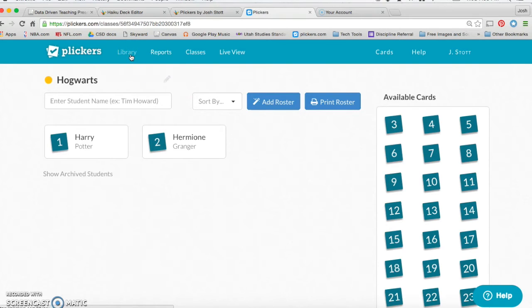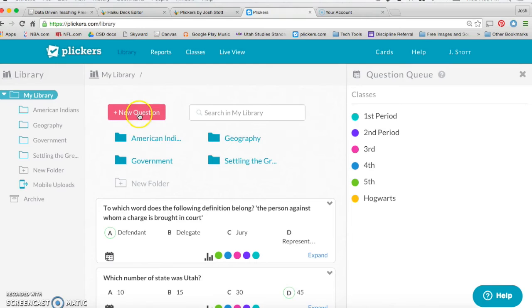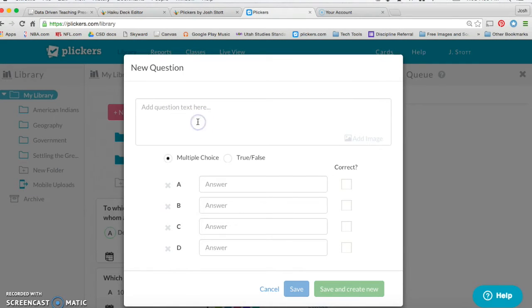After that, you'll go to Library, because you'll need to create some questions. The Library function is pretty easy. There's folders where you can store questions. You'll click New Question, create the question here.